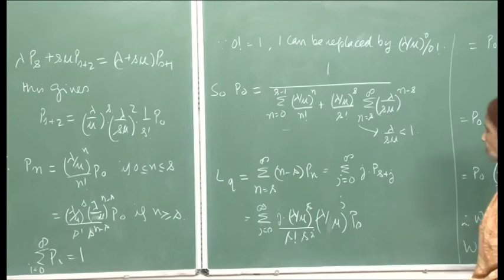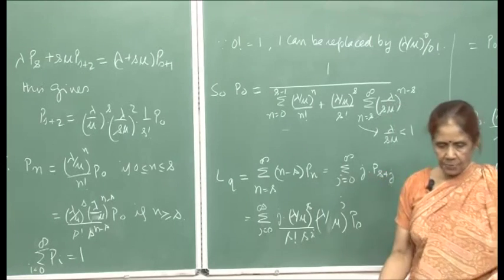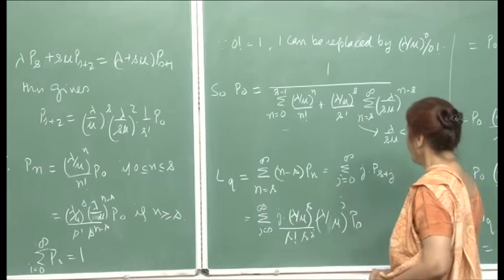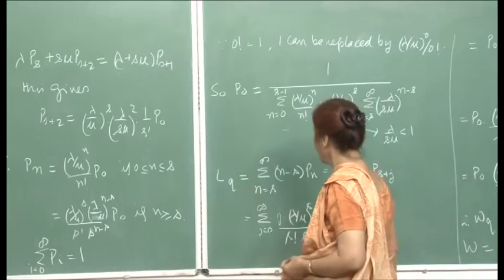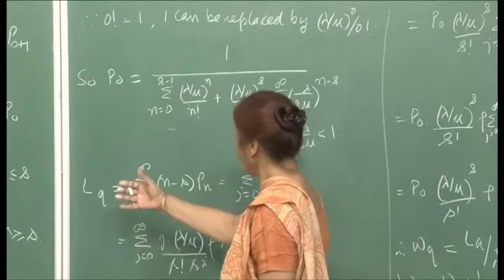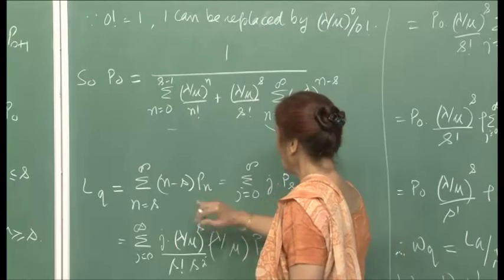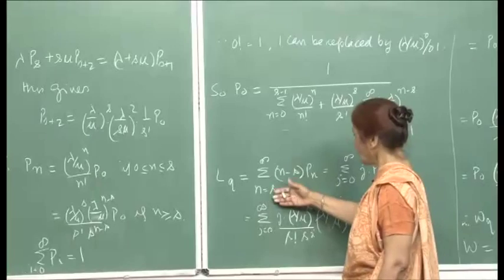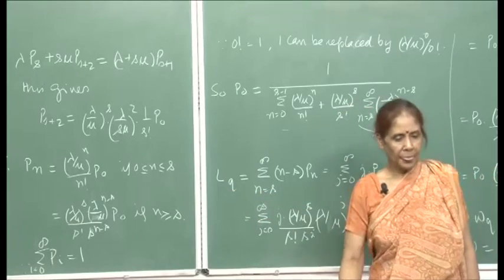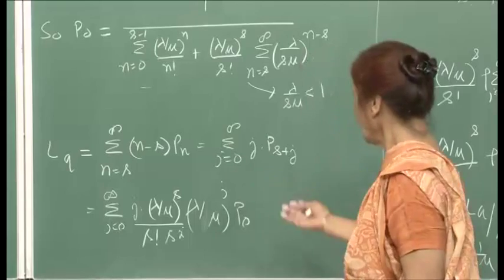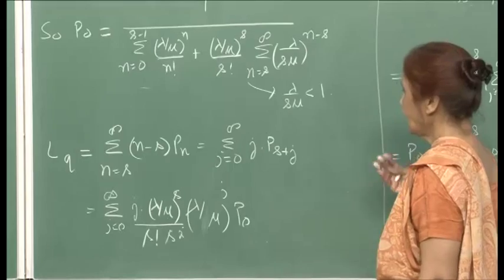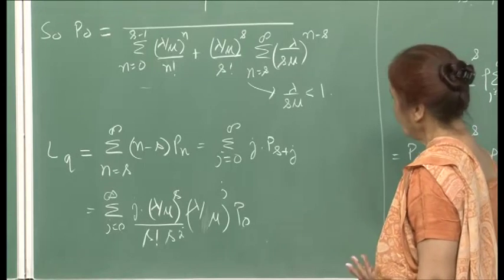Now we start computing the expressions for L, L_q, W, and W_q. Let us look at L_q first, the expected number in the queue, because there is a neat closed-form expression when n is s or greater. Once we get L_q we get L, then W and W_q by Little's formula.